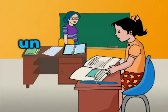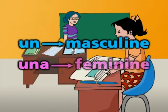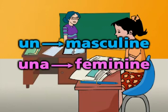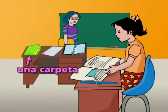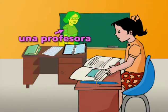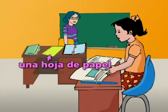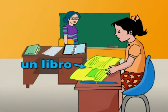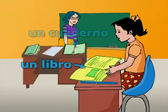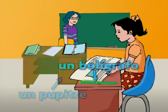You use un with masculine nouns and una with feminine nouns. So you would say: una carpeta, una profesora, una hoja de papel, un libro, un cuaderno, un pupitre, un bolígrafo.